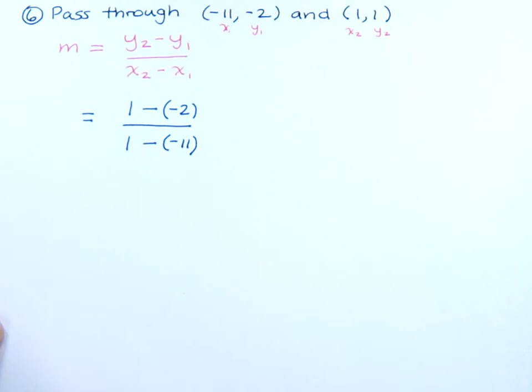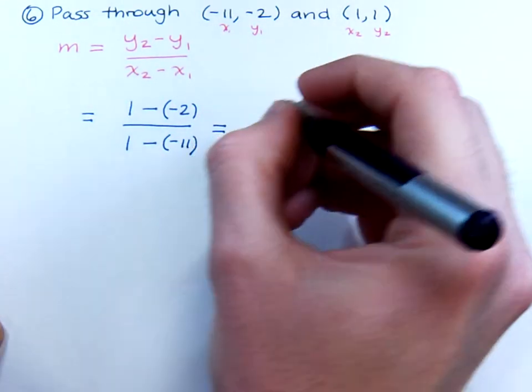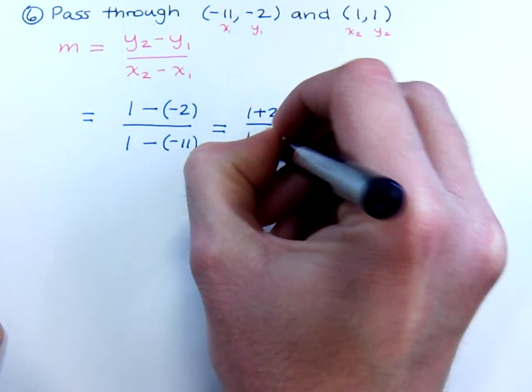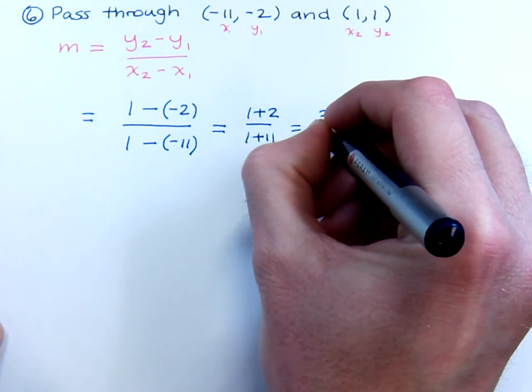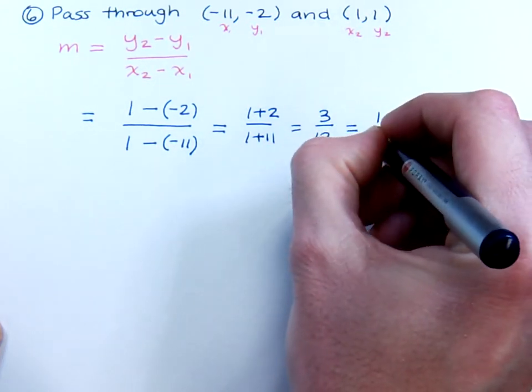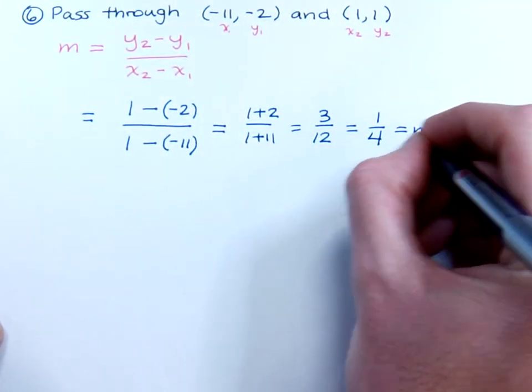Okay, now let's finish what your slope is. So your slope is going to be 1 plus 2 over 1 plus 11. So 3 over 12 is going to equal just 1 fourth when you simplify. So this is my slope.